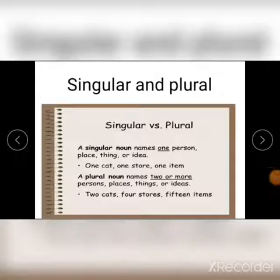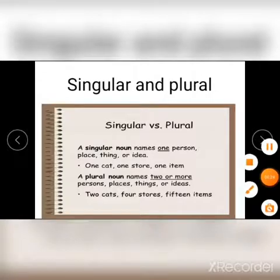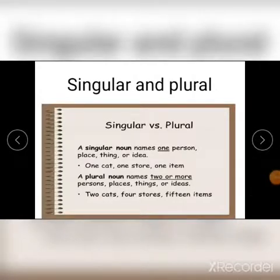Hello children, now we are going to see what is singular and plural. Singular means a noun which names only one person, place, thing, or idea. For example, one cat or one store — that is called singular. Plural means two or more things, so that is called plural. For example, cats means two or more cats.